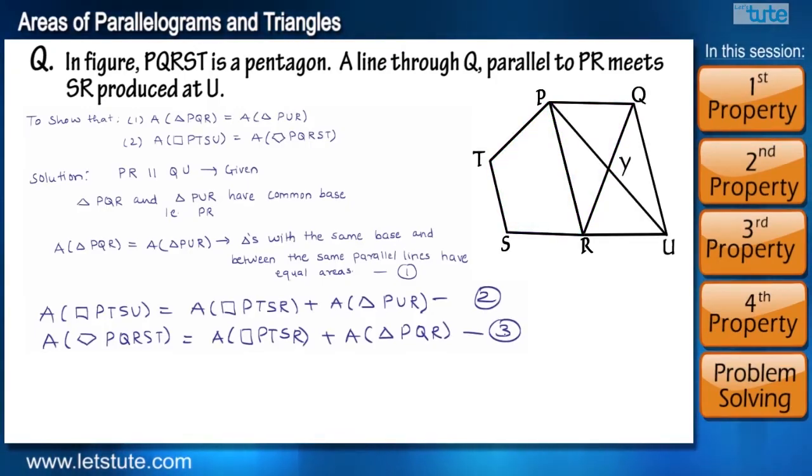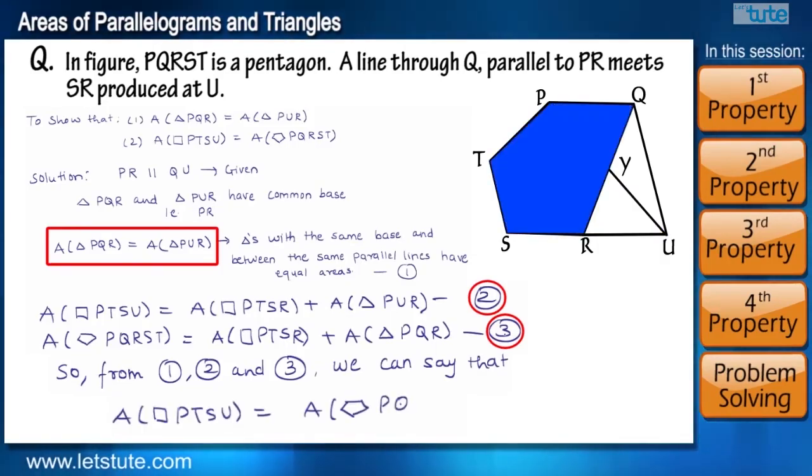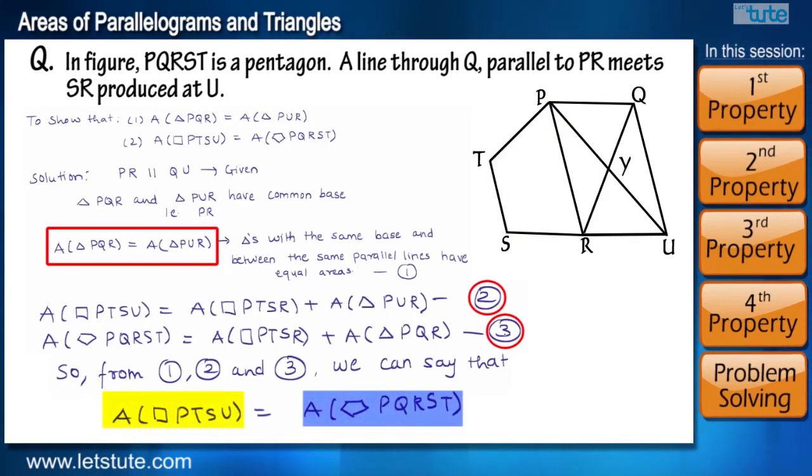And as we have already proved that both the triangles have same area, so from 1, 2 and 3 we can say that the quadrilateral and the pentagon will also have equal area.